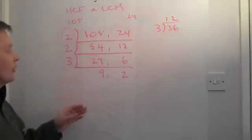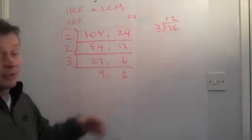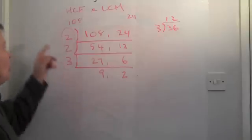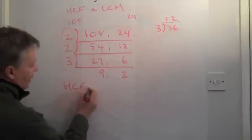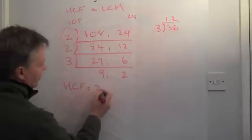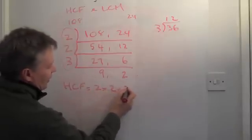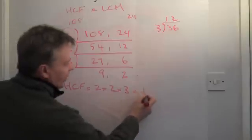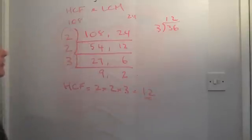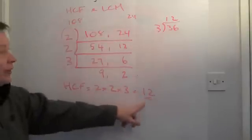Now, in order for this to work properly, you have to make sure that when you get to the bottom, there's nothing left to do. But, the HCF can be worked out by saying, HCF equals 2 times 2 times 3, which is 2 times 2 is 4, times 3 is 12. So, the HCF of 108 and 24 is 12.